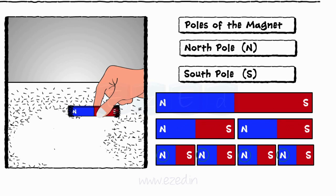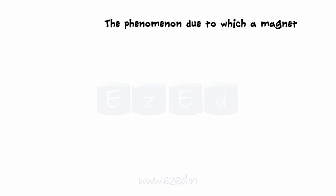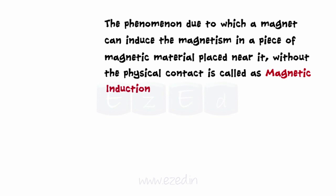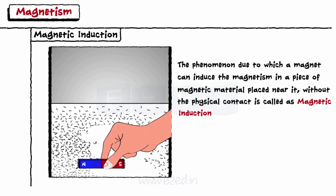The phenomenon due to which a magnet can induce the magnetism in a piece of magnetic material placed near it, without physical contact, is called as magnetic induction. That is, when the magnet is brought near the iron pieces, it induces the magnetism and the pieces get attracted towards the magnet.